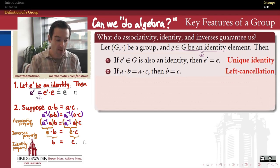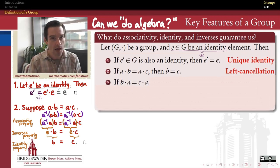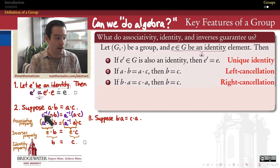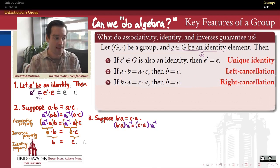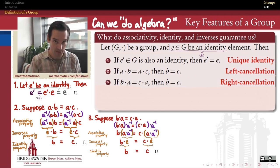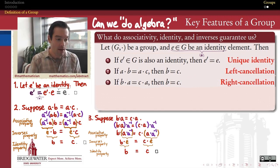There was nothing special about the left side of these expressions. If I had a common factor on the right side of both — BA equals CA — I could also cancel those A's on the right, using the process called right cancellation. The proof is completely analogous: at the first step, instead of operating by the inverse of A on the left side, we operate by the inverse of A on the right side, then use associativity, the inverse property, and the identity property to conclude B equals C.